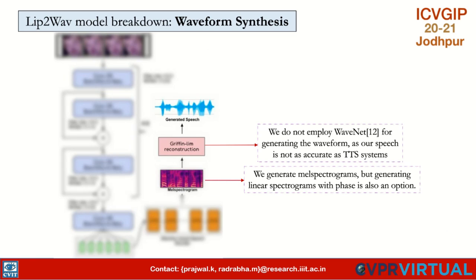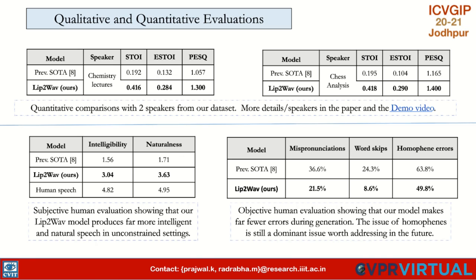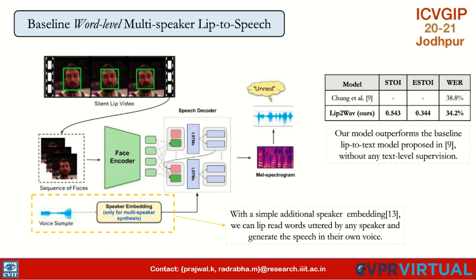We generate raw waveforms from the mel spectrogram using the Griffin-Lim algorithm. We did not use a popular vocoder like WaveNet because our mel spectrograms were noisy, causing WaveNet to perform poorly. We evaluate results both qualitatively and quantitatively using metrics like PESQ and STOI, finding that our network outperforms previous works by a good margin. Human evaluations also show that participants consistently rate our network higher than previous works.